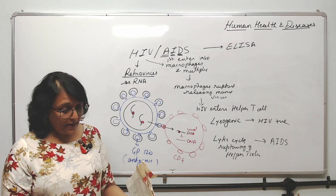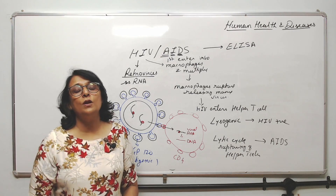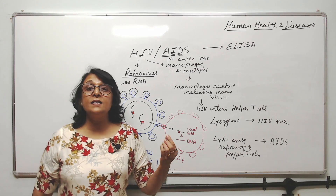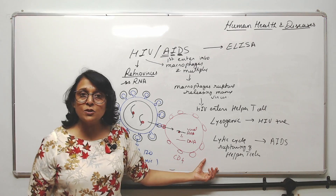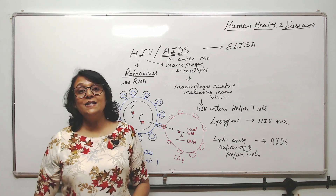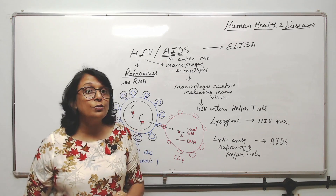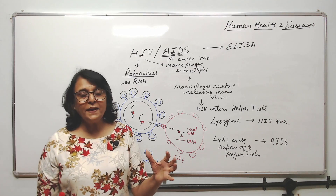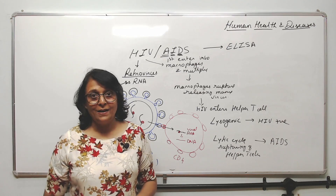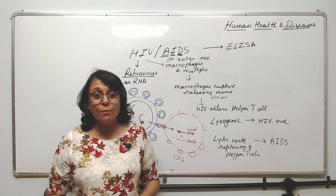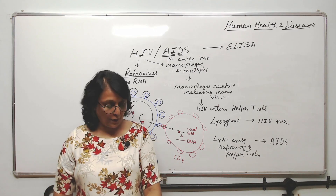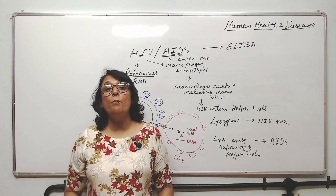When helper cells have ruptured, the immune system is compromised and deficient. Common pathogens can then attack the body — these are called opportunistic diseases, because they find an opportunity to enter a weakened body. In a healthy body, we can fight such diseases on our own, often without even needing medicines.